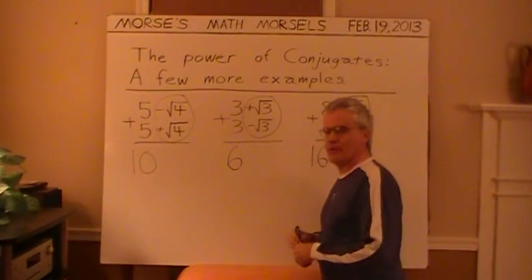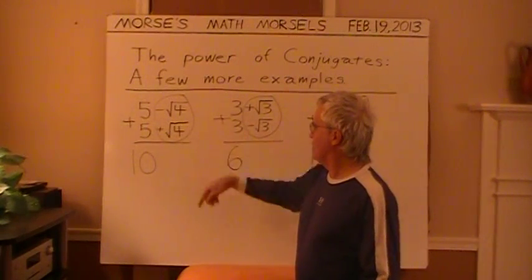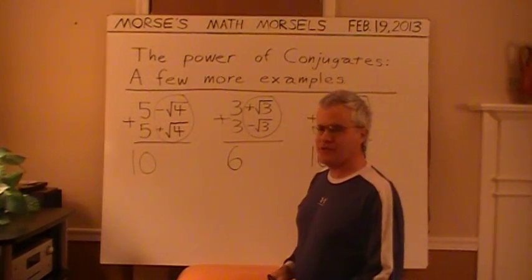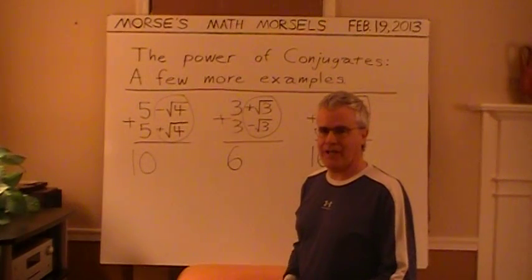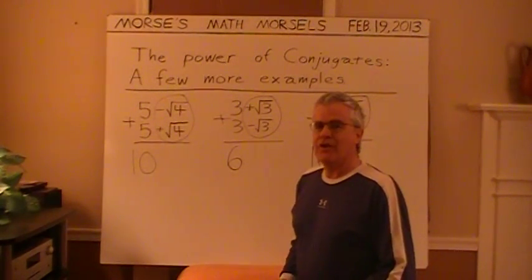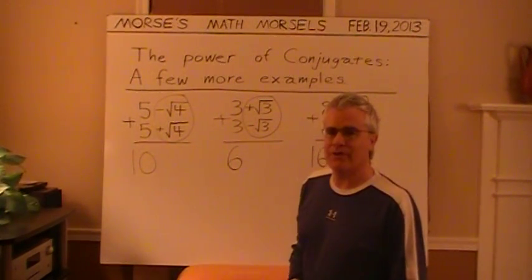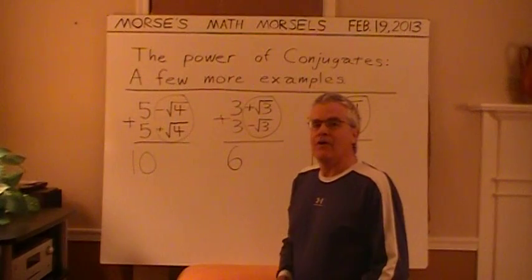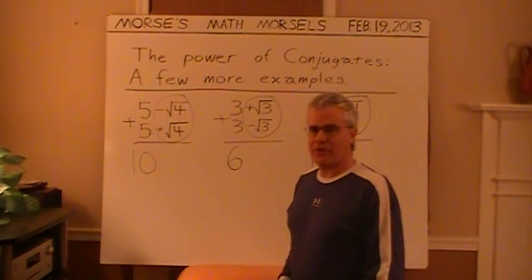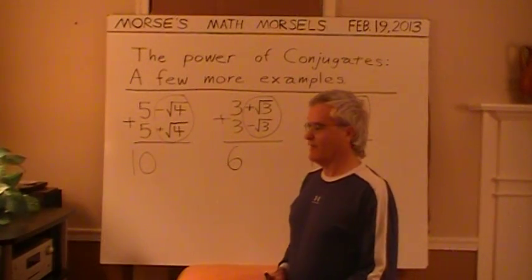So there's another power of conjugates. Adding them will remove that second term in each expression, and that can be very handy when you're trying to perform operations such as rationalize a denominator, in which you have a fraction with a conjugate or some radical expression in the denominator, and you need to use the conjugate to get rid of it.